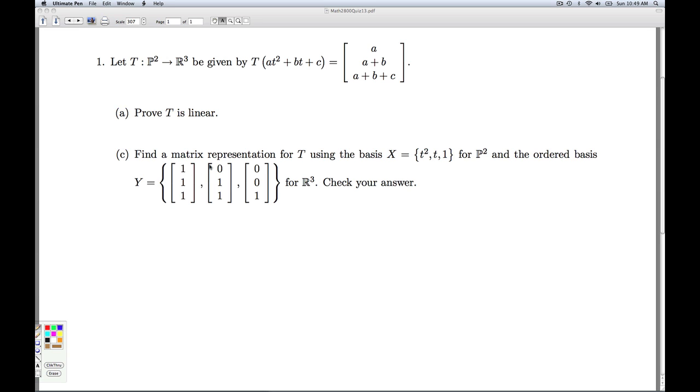Okay, so in part C we're asked to find a matrix representation for T. The basis for the domain is the same, but now we're changing the basis for the co-domain. So how are we going to do that?